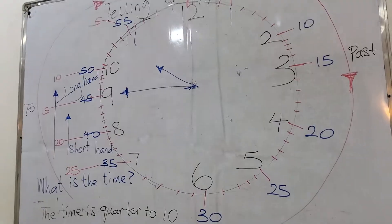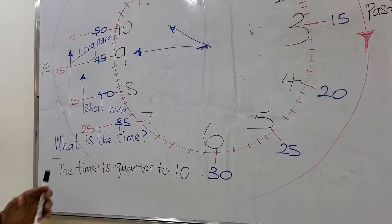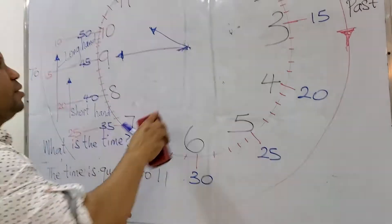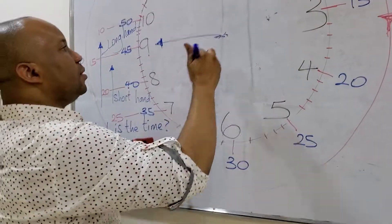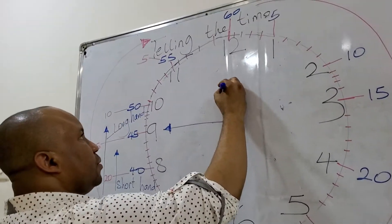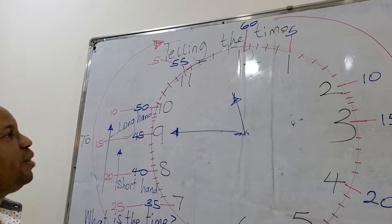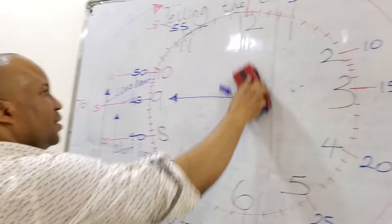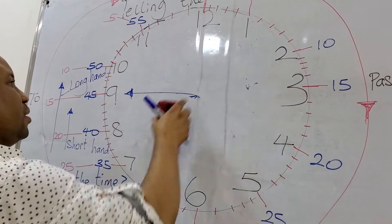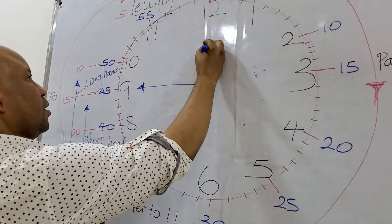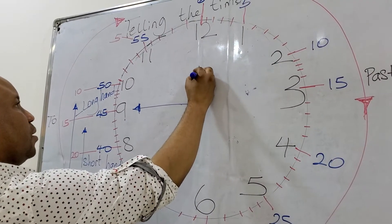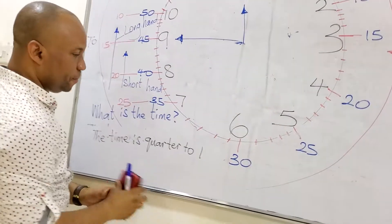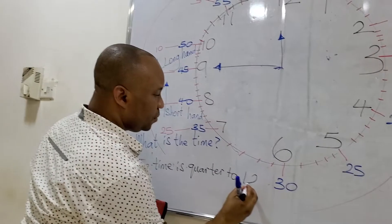What is the time? The time is quarter to eleven. What is the time? The time is quarter to twelve.